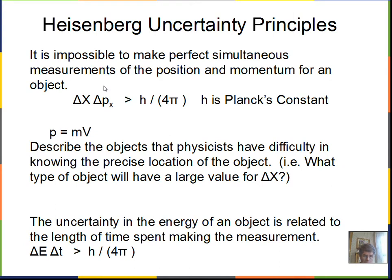Two uncertainty principles here. One, it's impossible to make perfect simultaneous measurements of the position and the momentum in that direction for an object. So we have delta x. That's the uncertainty in position in the x direction. And the momentum has an uncertainty in the x direction. The multiplication of these two quantities is going to be greater than or equal to Planck's constant divided by 4 pi.